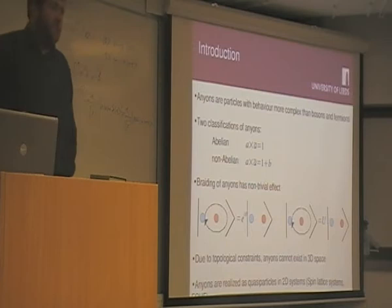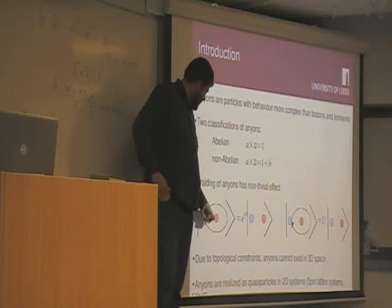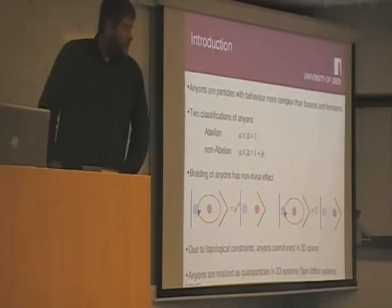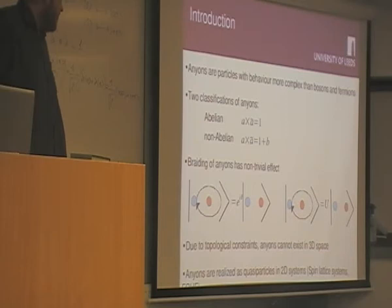The braiding of anyons has a non-trivial effect. If you have two anyons, a state of two anyons such as this, and then you do an operation which moves this one around the other anyon and brings it back to its initial position, what you get back is your original state but with, say, e to the i theta, where theta's determined by the types of anyons you're using and whether you go clockwise or anti-clockwise.